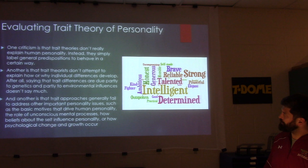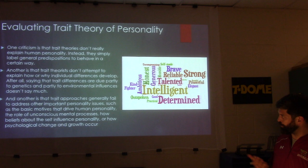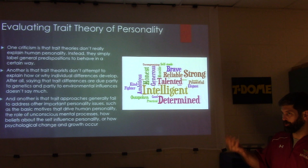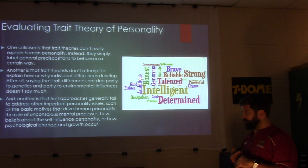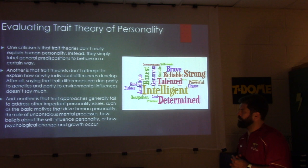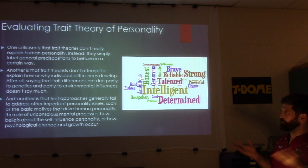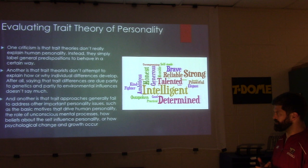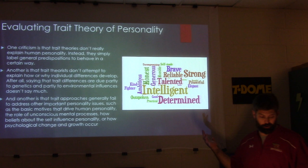When evaluating trait theory, one criticism is that trait theories don't really explain human personality — they simply label it. Another is that trait theorists don't attempt to explain how or why individual differences develop; they acknowledge traits are due partly to genetics and partly to environment, but don't address where they come from. A third criticism is that trait theories generally fail to address basic motives that drive human personality, the role of the unconscious, how beliefs about the self influence personality, or how psychological change and growth occur.